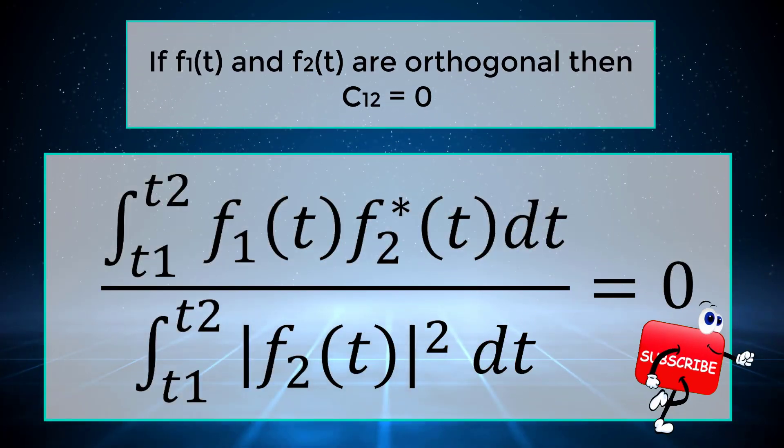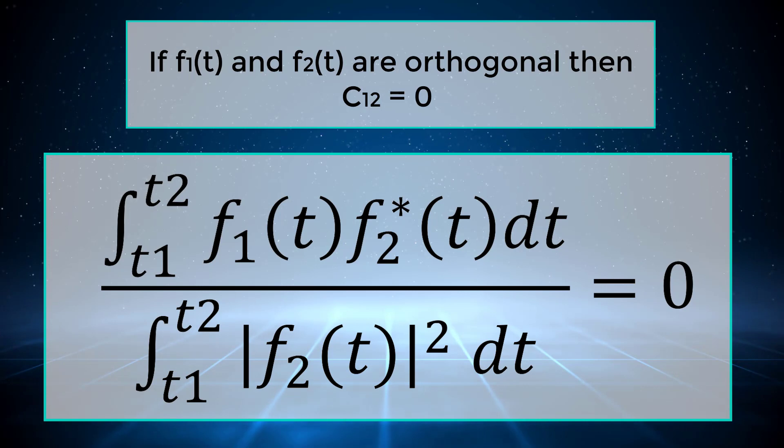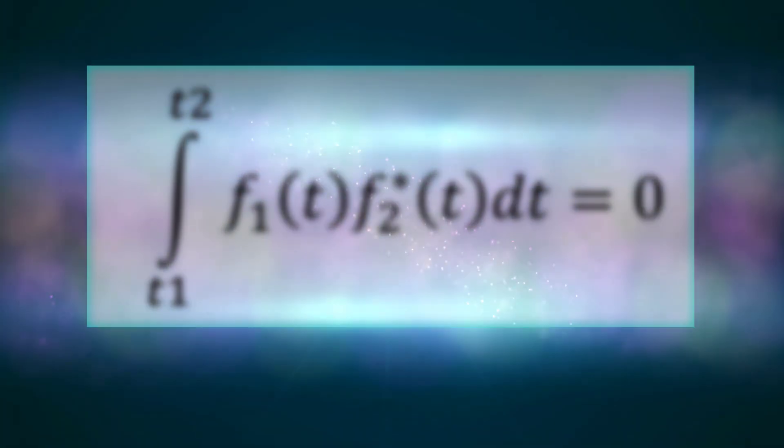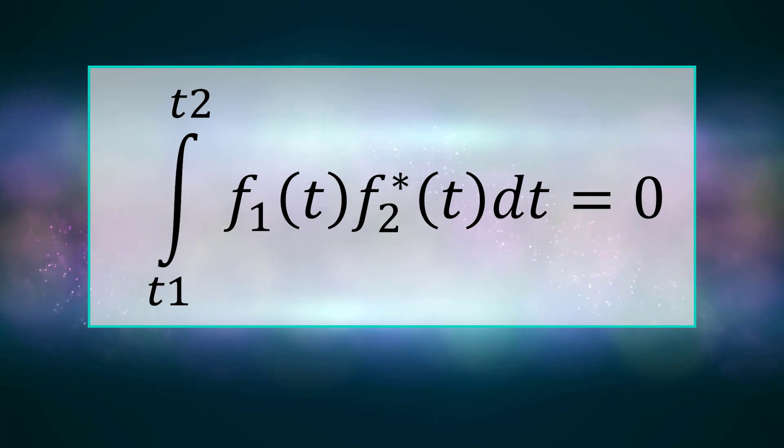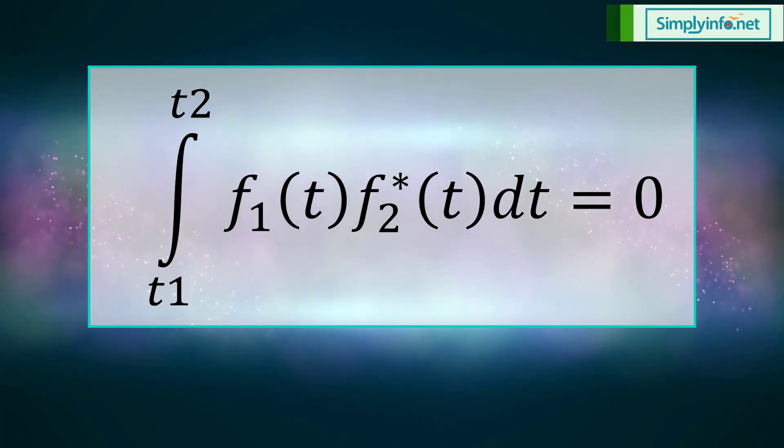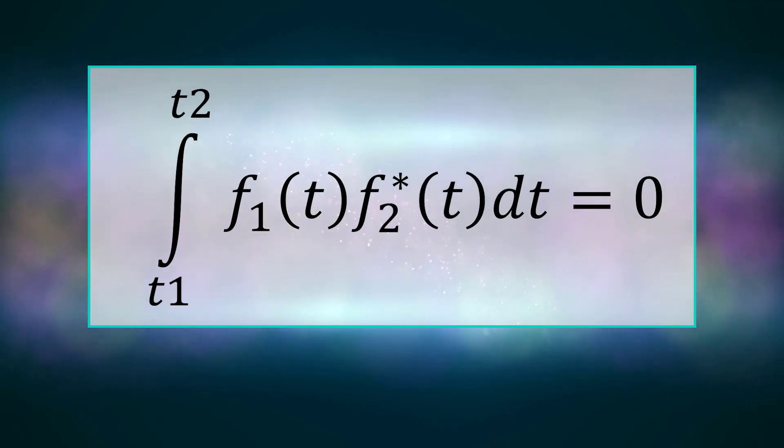The integral from t1 to t2 of f1(t) into f2 star of t dt, divided by the integral from t1 to t2 of the square of f2(t) dt, equals 0. Therefore, the integral from t1 to t2 of f1(t) into f2 star of t dt equals 0.